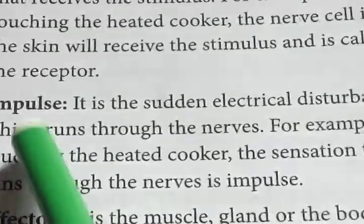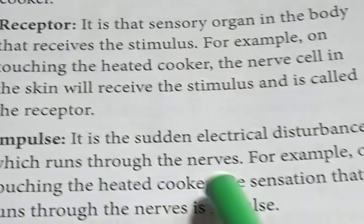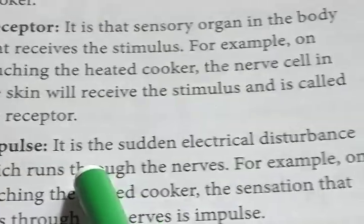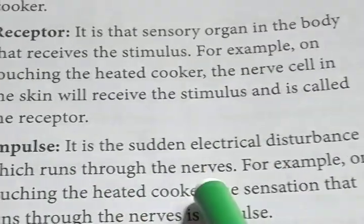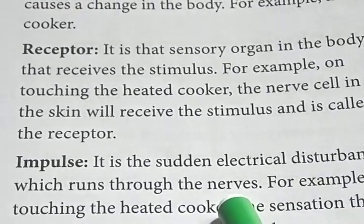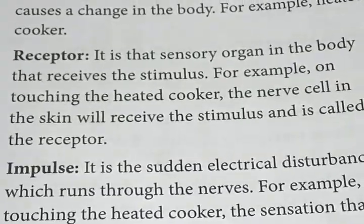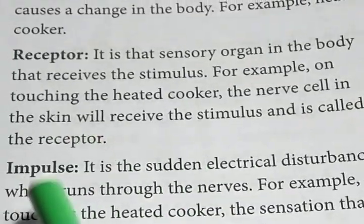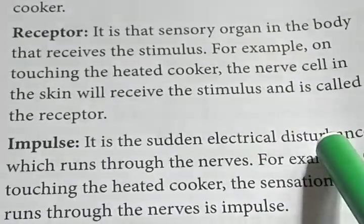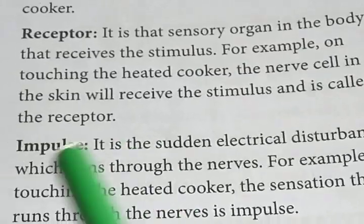Next is impulse. It is the sudden electrical disturbance which runs through the nerves. This term is very important. Basically, nerves are of three types: sensory nerves, motor nerves, and mixed nerves. Impulse is the electrical disturbance which occurs inside our nerves.